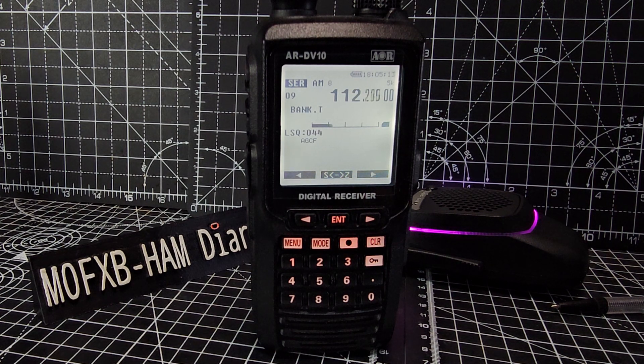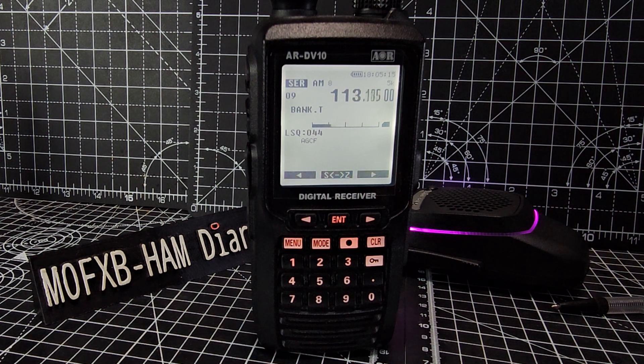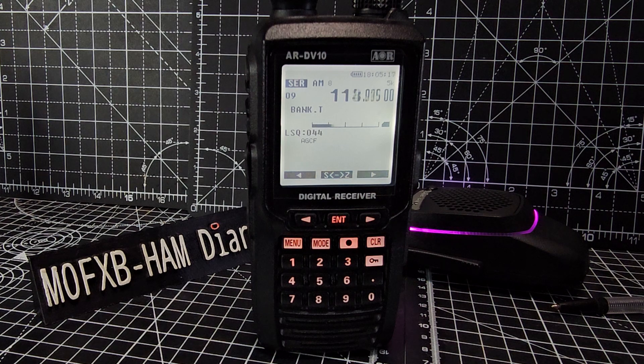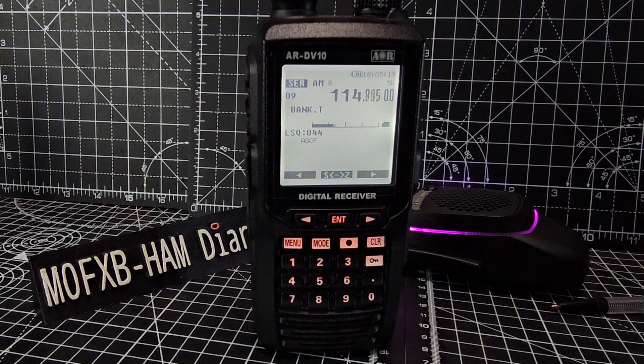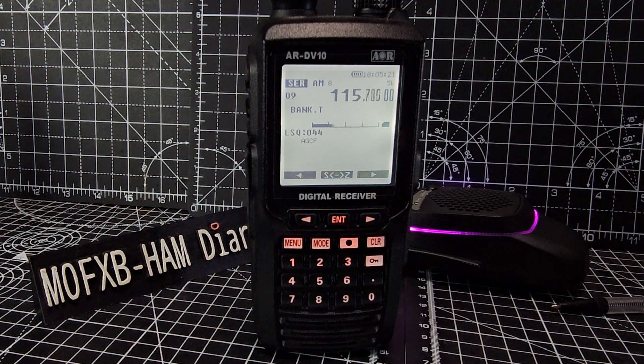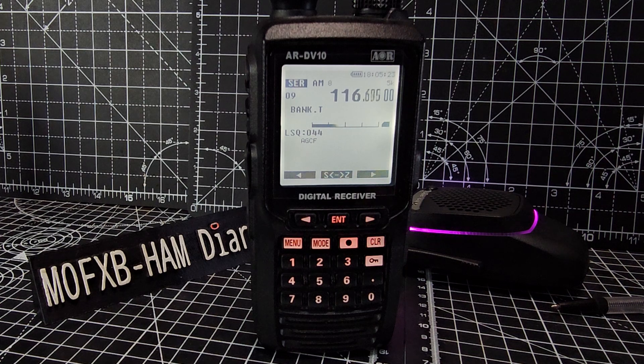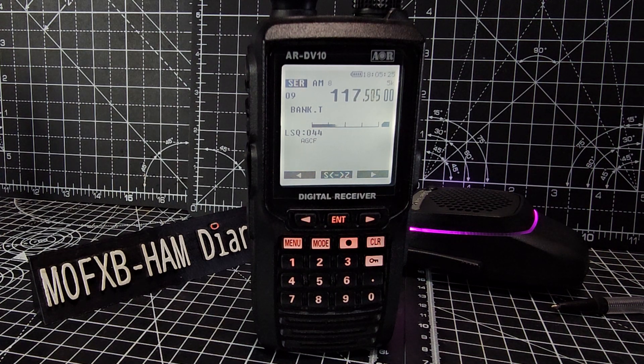Or if you wanted to do some scanning, you can create banks. And of course it doesn't have to be airband. It could be anything that you're interested in. But right now it's scanning the airband. And if we go outside, we can change the step if we want. We can change a few little parameters here. You can get some aeroplanes.